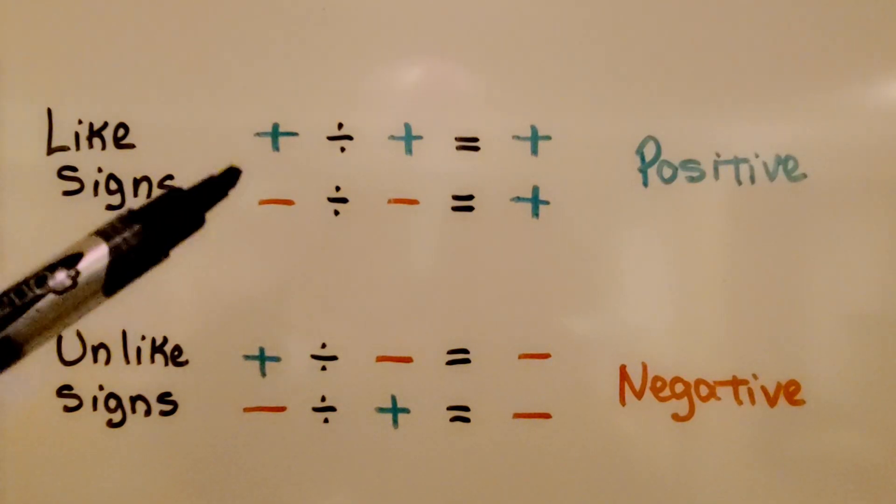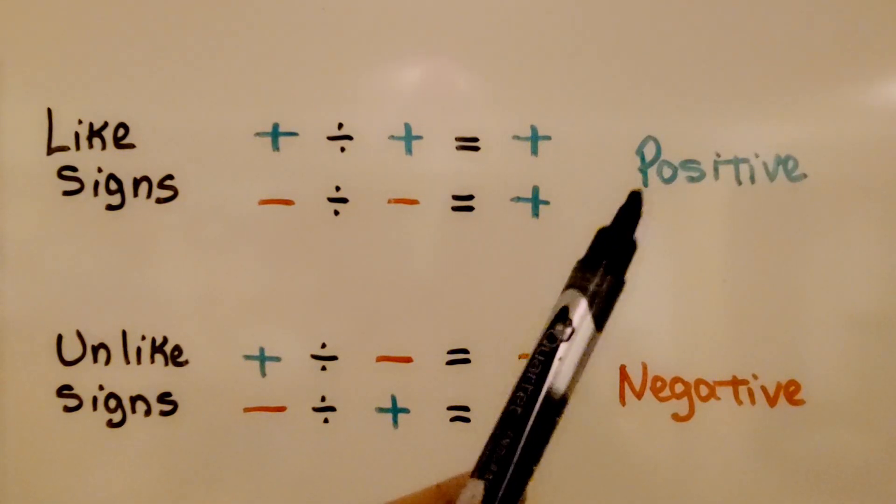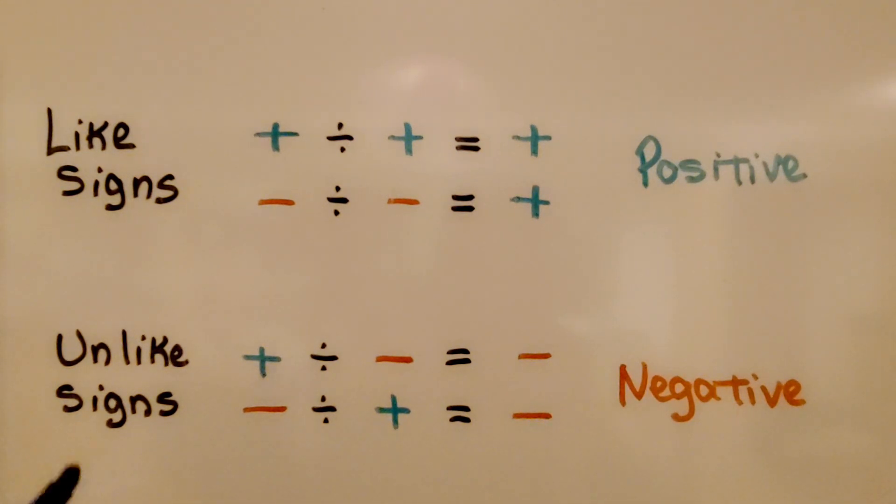When we divide like signs, our quotient will be positive. When we divide unlike signs, our quotient will be negative.